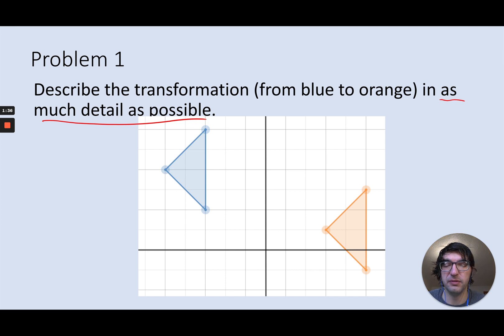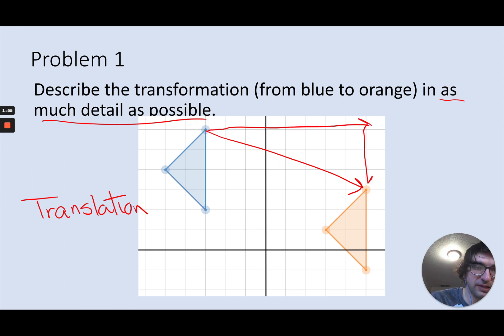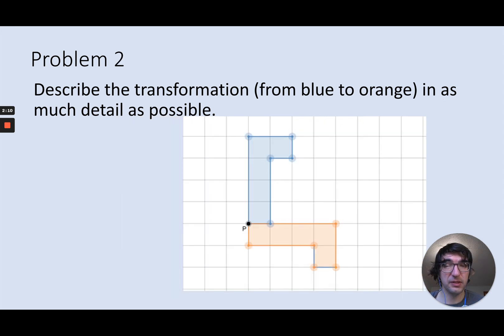Okay, so first one here from blue to orange. It looks like I'm just sliding it over. It is a translation because I'm just sliding this thing. And I can be more specific than that because I can say how far I'm going. So I can count off how far to the right I go and how far down I go. So it looks like one, two, three, four, five, six, seven, eight units to the right and then down three. So I'll say eight right and down three. So that's what we're looking for for these different transformations—can I be very specific about what is going on?